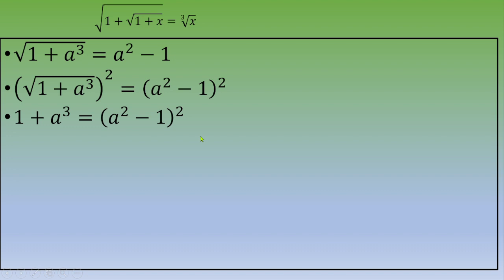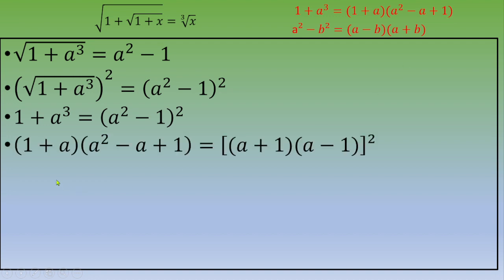On the right side we have (a squared minus 1) squared, which is a difference of squares: a squared minus b squared equals (a minus b)(a plus b). On the left side, 1 plus a cubed uses another remarkable identity: 1 plus a cubed equals (1 plus a)(a squared minus a plus 1). So we get: (1 plus a)(a squared minus a plus 1) equals (a plus 1)(a minus 1) squared.